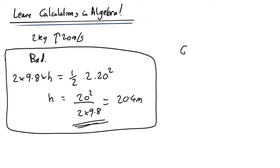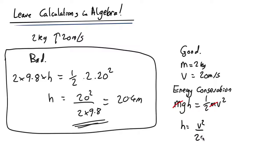So how to do it correctly? Good. We'll define variables. We'll have mass equals 2 kilograms. Velocity equals 20 meters per second. Use energy conservation. So explain what you're doing. So we've got mgh equals half mv squared. Cancel the masses. Rearrange. We get h equals v squared over 2g. And now we substitute in the numbers. Equals 20 squared over 2 times 9.8 equals 20.4 meters.